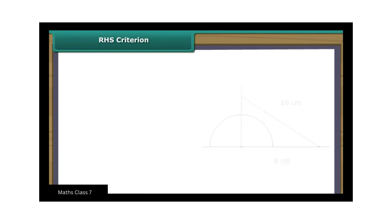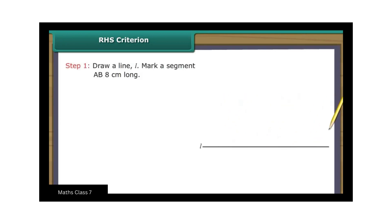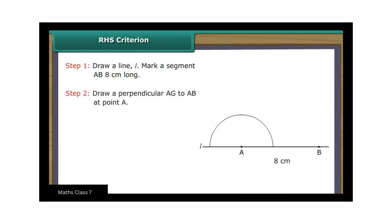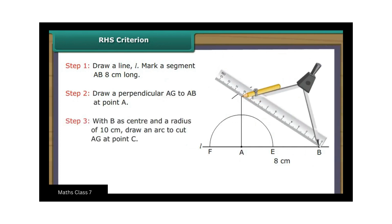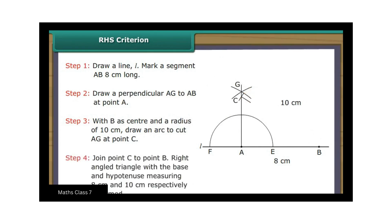RHS Criterion. Let us now draw a triangle, one of whose angles measures 90 degrees and the base and hypotenuse are 8 cm and 10 cm respectively. Draw a line L and mark a segment AB 8 cm long. Draw a perpendicular AG to AB at point A. With B as center and a radius of 10 cm, draw an arc to cut AG at point C. Join point C to point B. The right angled triangle with a base and hypotenuse measuring 8 cm and 10 cm respectively is formed.